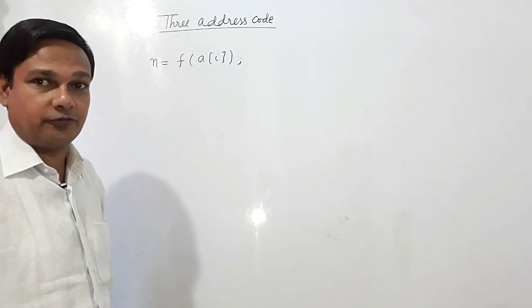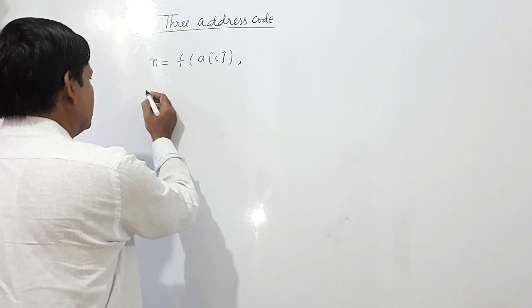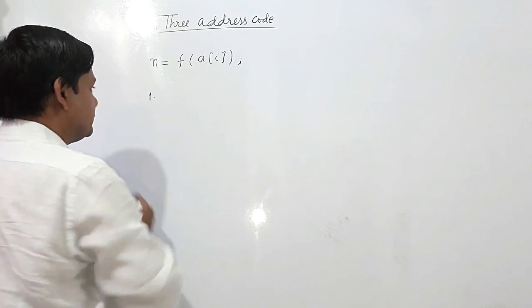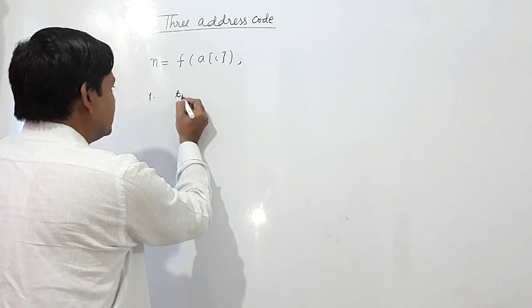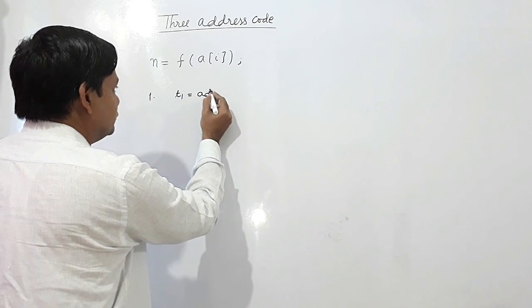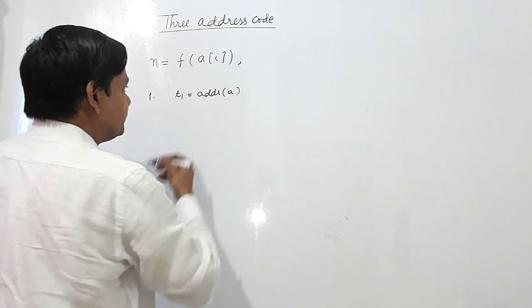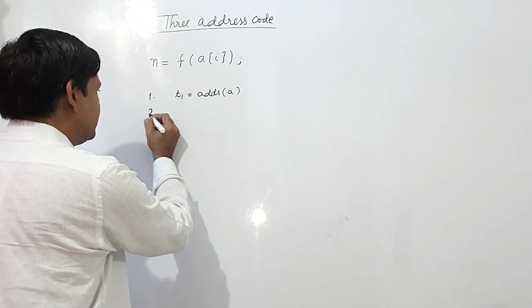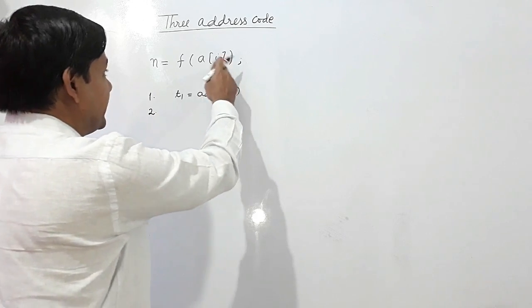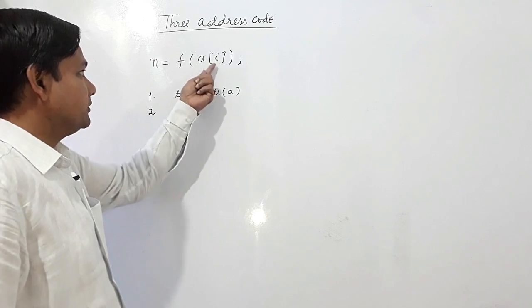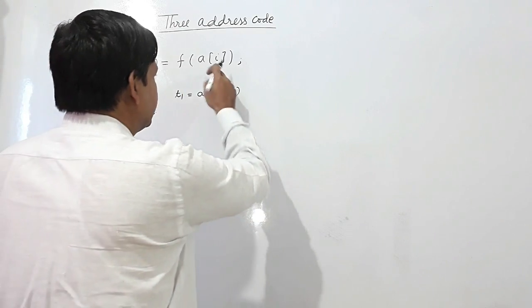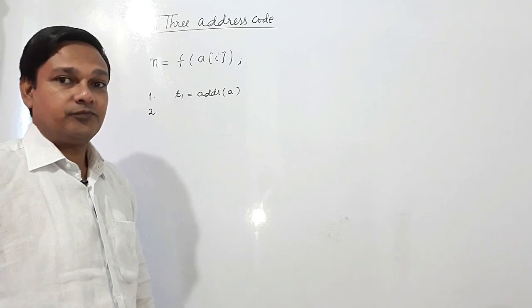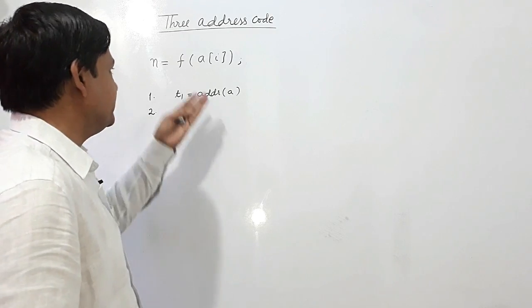First, I will write here t1 equals address of a. Next, second, the size of i - if I am assuming it's a size is 4 bytes if it's an integer.